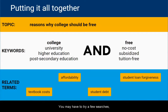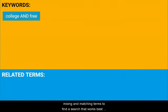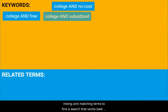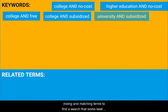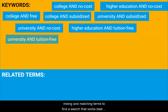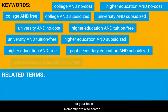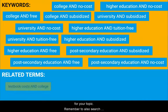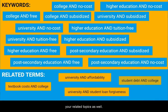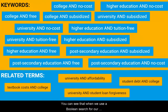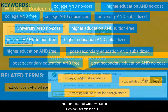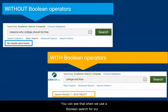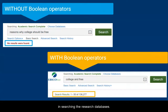You may have to try a few searches, mixing and matching terms, to find a search that works best for your topic. Remember to also search your related topics as well. You can see that when we use a Boolean search for our topic, we are much more successful in searching the research databases.